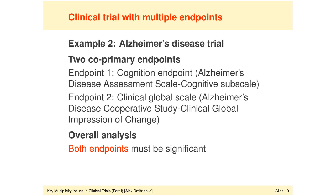The first endpoint is a cognition endpoint based on the Alzheimer's Disease Assessment Scale — the cognition subscale. The second endpoint is a clinical global scale based on the Alzheimer's Disease Cooperative Study Clinical Global Impression of Change. It's the same number of endpoints as in example one, but the WIN criteria or clinical decision rules here are completely different compared to example one. In this clinical study, we must demonstrate a significant effect on both endpoints simultaneously — not just one endpoint as in example one.